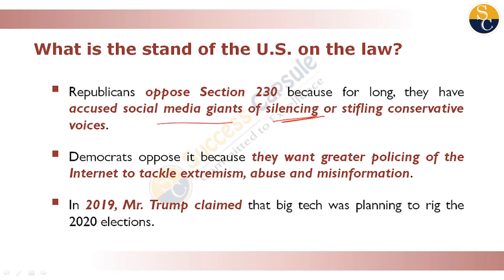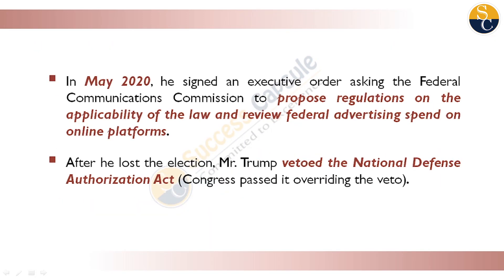The Democrats say that other policies should be made so that extremism, abuse, and misinformation on the internet can be tackled. In 2019, President Trump claimed that big companies were planning to rig the 2020 elections. In May 2020, an executive order was signed in which the Federal Communications Commission was directed to propose regulations for this law.